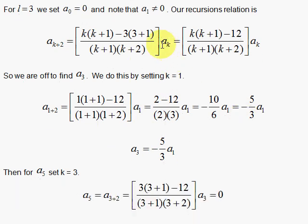So for the odd powers, we pick k to be 1 to find a sub 3. So k is 1, and we have 1 times 2, and here we have 2 times 3. So 2 times 3, and 2 minus 12, minus 10 over 6, which reduces to minus 5 thirds a 1. a3 is minus 5 thirds a 1,